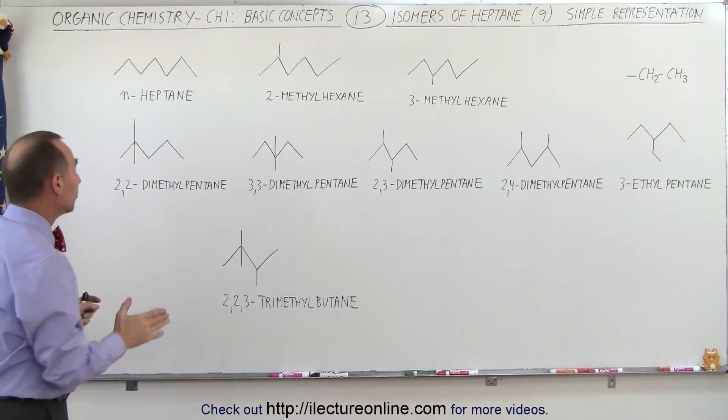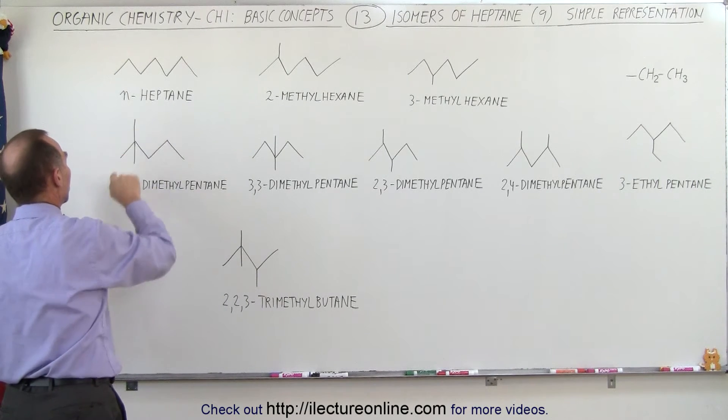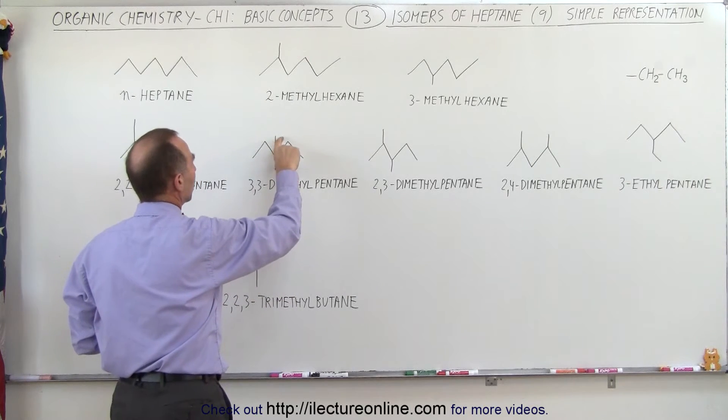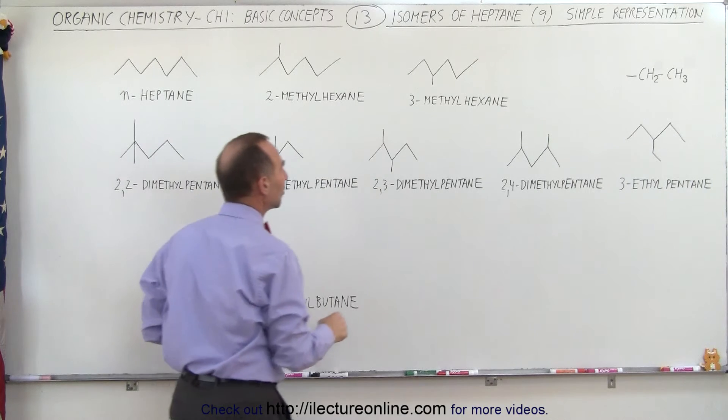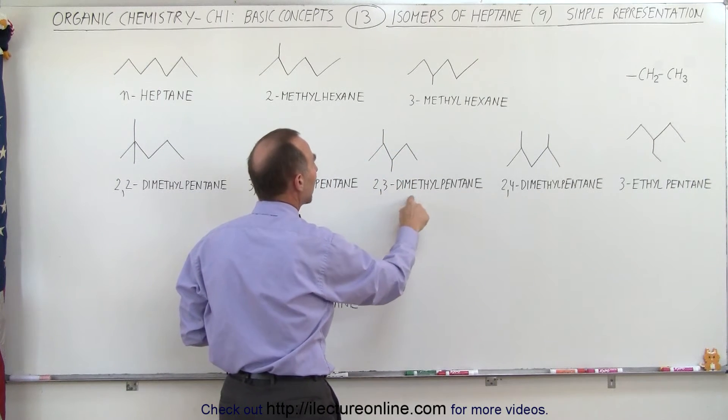Where we place them determines the numbers in the front. If both of them are connected to the second carbon, it's 2,2-dimethylpentane. If they're both connected to the third carbon, it's 3,3-dimethylpentane, or if one is connected to the second and one is connected to the third, it's 2,3-dimethylpentane.